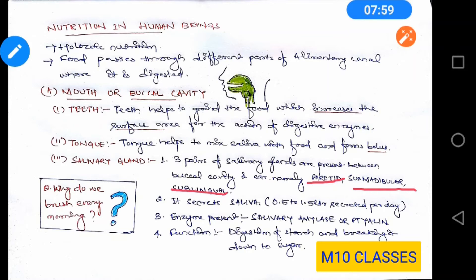There is a question for you: why do you brush every morning? In your teeth, you have enamel which is the hardest substance in your body — it doesn't corrode in water. But when food remains in your mouth, it gradually decomposes; sugars are broken down to form acids, and enamel decays in acid. That is why we need to brush every morning. The toothpaste is basic, which neutralizes the acidity in your mouth and protects the teeth from decaying.